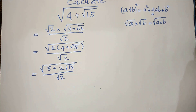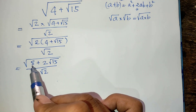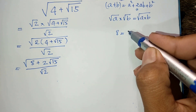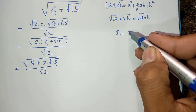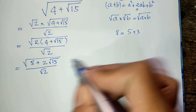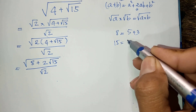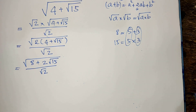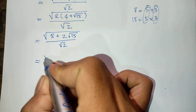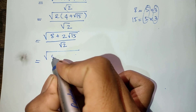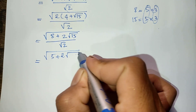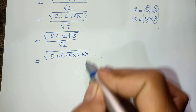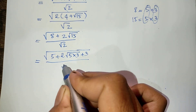Now look at this: 8 can also be written as 5 plus 3, and 15 can also be written as 5 times 3. So the expression 8 + 2·square root of 15 becomes 5 + 2·square root of 5 times 3 + 3.